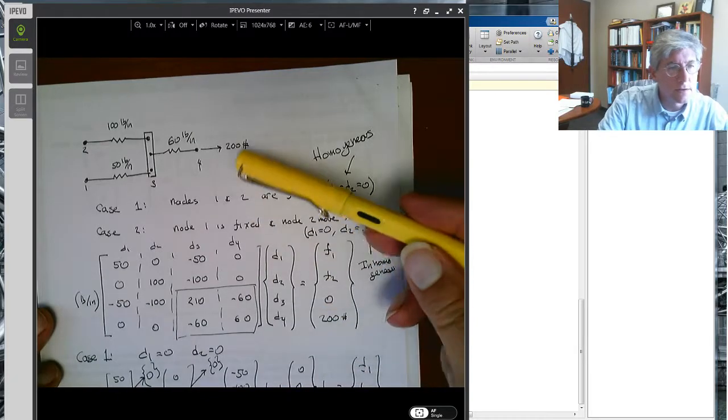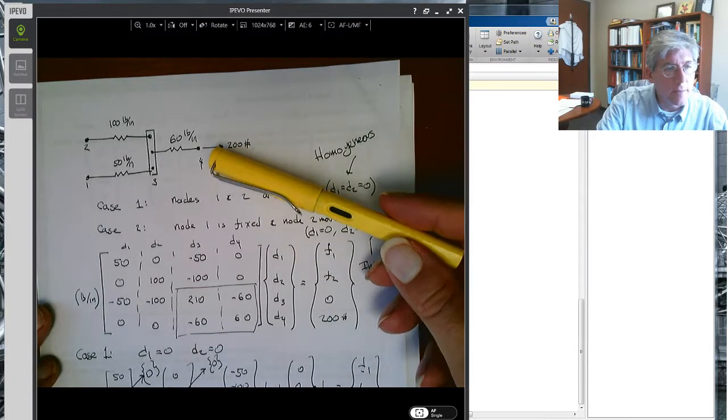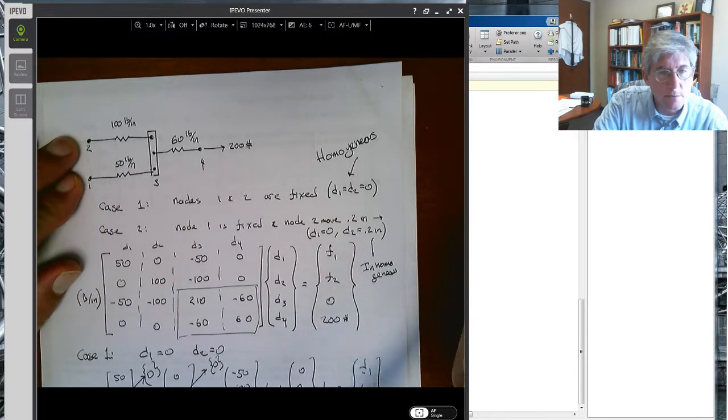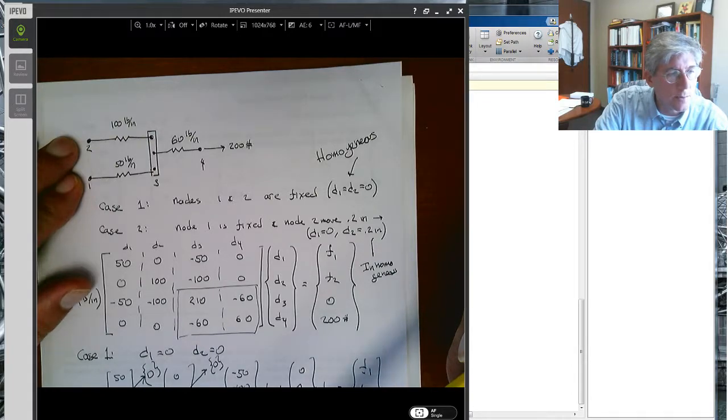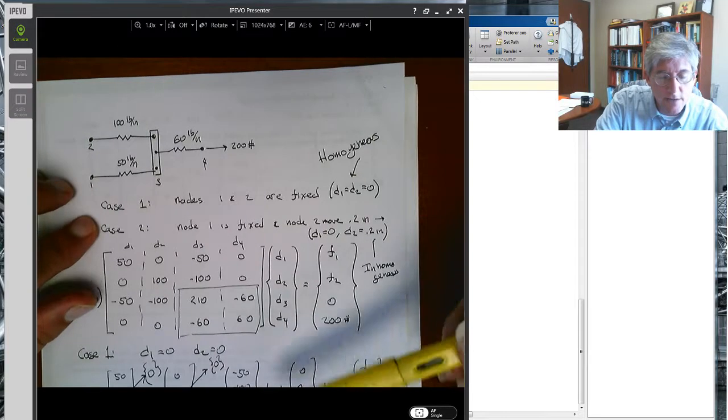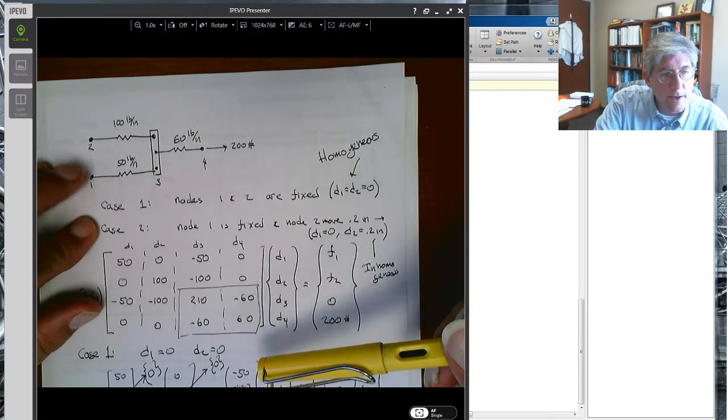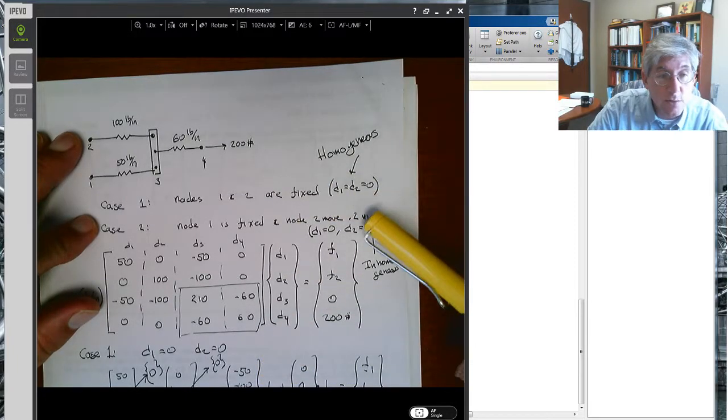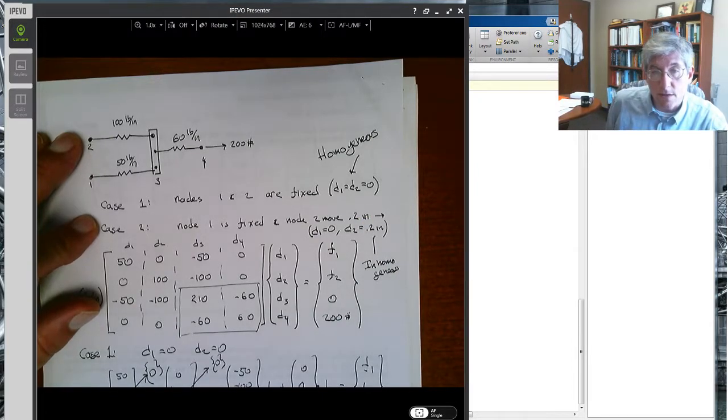Here's the problem we were solving. In the first case, we considered both nodes one and two to be fixed, or the displacements at those nodes to be zero. These are what we call homogeneous boundary conditions. Now in the second case, we're going to have node one fixed, but we're going to prescribe a displacement to the right, 0.2 inches at the second node. So that's going to be an example of an inhomogeneous boundary condition.